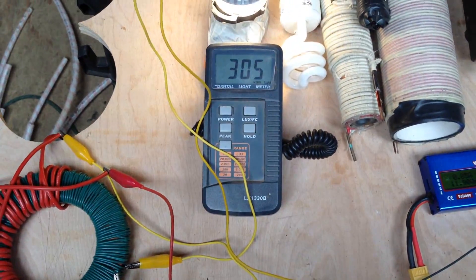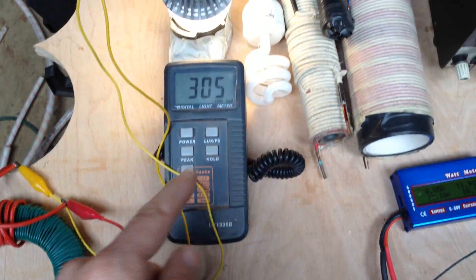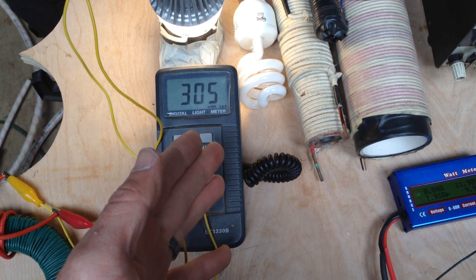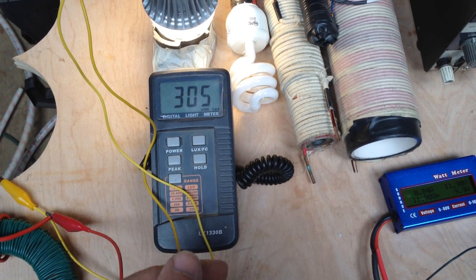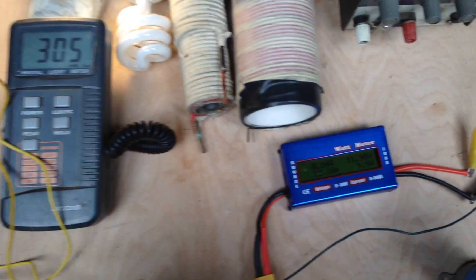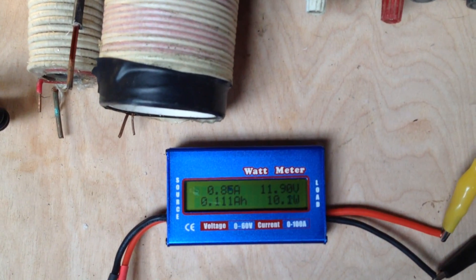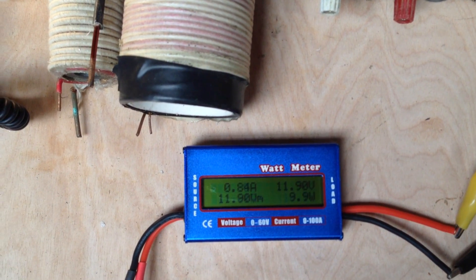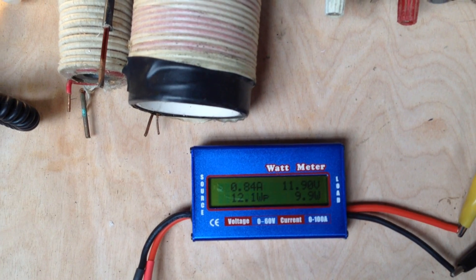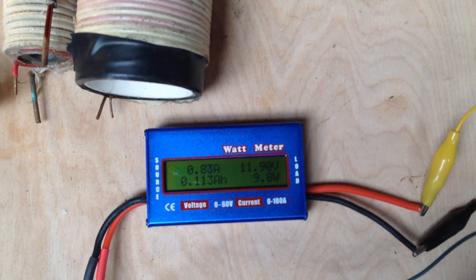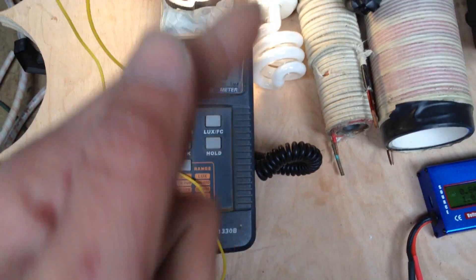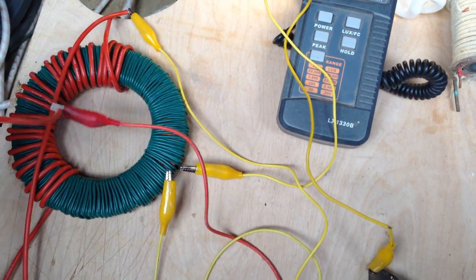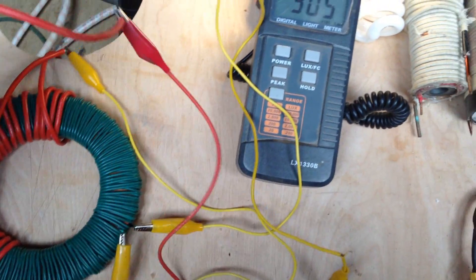So now we're running on the Joule Bringer here that we're tuning. You can see that we're at 305 on the light meter, so almost the same light intensity. 305 to 315 is very close, we're going to go ahead and try to get above. But we're pulling 9.9 to 10 watts. So significant drop in wattage usage for almost the same light. Now I'm going to go ahead and see if I can't tune this and do it even better.